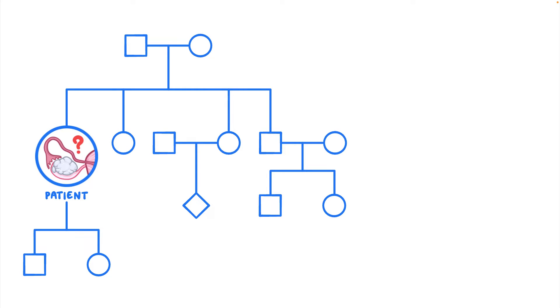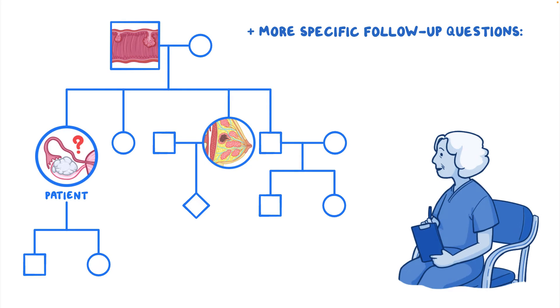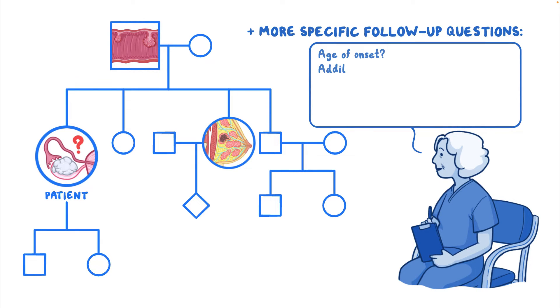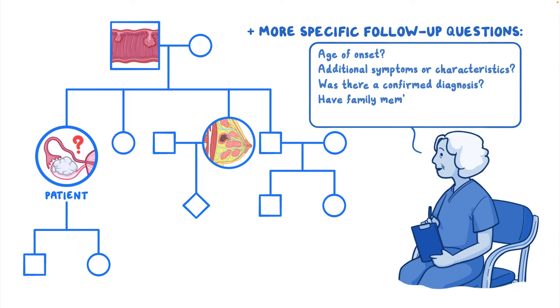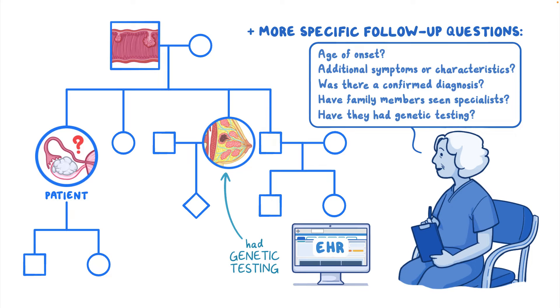For instance, if a patient is suspected of having ovarian cancer, a pedigree would allow the provider to document and describe other family members with ovarian, breast, colorectal, or other types of cancer. Then, more specific follow-up questions can be asked about family members with these potentially significant conditions, like age of onset, additional symptoms or characteristics, and if there was a confirmed diagnosis. Asking if family members have seen specialists or have had genetic testing can be especially informative and can be noted in the pedigree or in an electronic health record family history form or table.